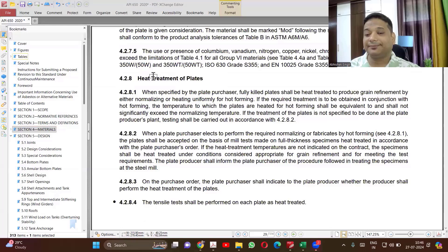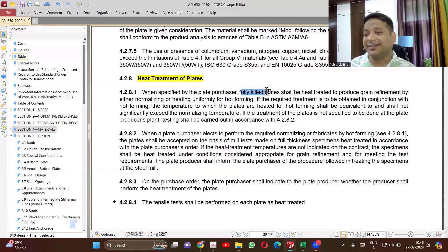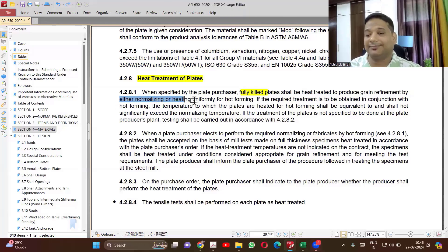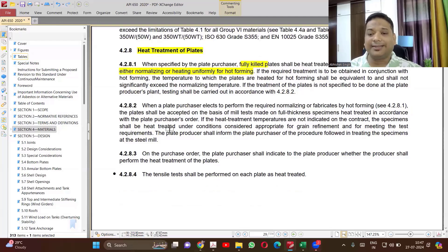Now heat treatment. Most of the time you won't require heat treatment, only when specified by the purchaser when your thickness is exceeding. So there is no hard and fast thickness limit given as we have in ASME. But it is saying that when specified by the plate purchaser, fully killed plates, fully killed means by removing all the oxygen, shall be heat treated to produce the grain refinement by normalizing. So now it will be only required when the client is specified. Otherwise it won't become applicable. Most of the time you won't find this heat treatment.